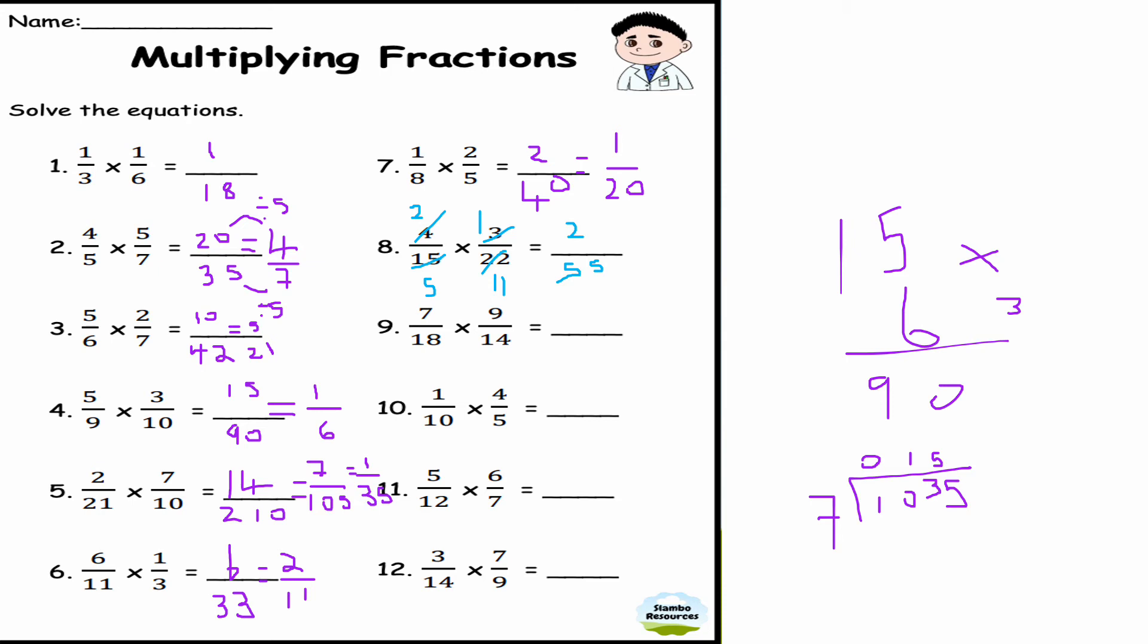Question number nine: 7/18 times 9/14. Well, dividing top and bottom by 9, I get 1 there and 2 here. Dividing top and bottom by 7, I get 1 here and 2 here. 1 times 1 is 1, and 2 times 2 is 4, so the answer is 1/4.